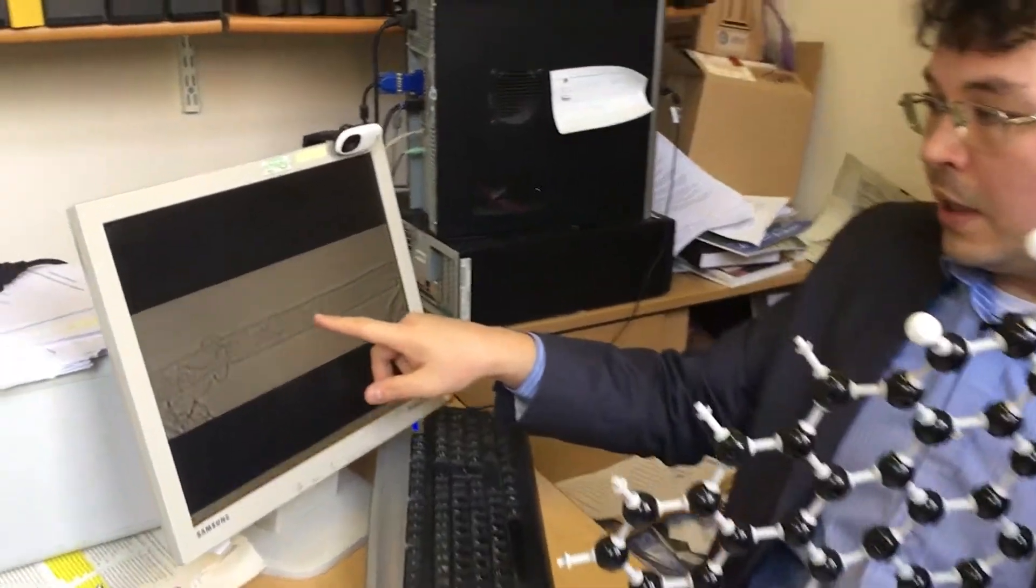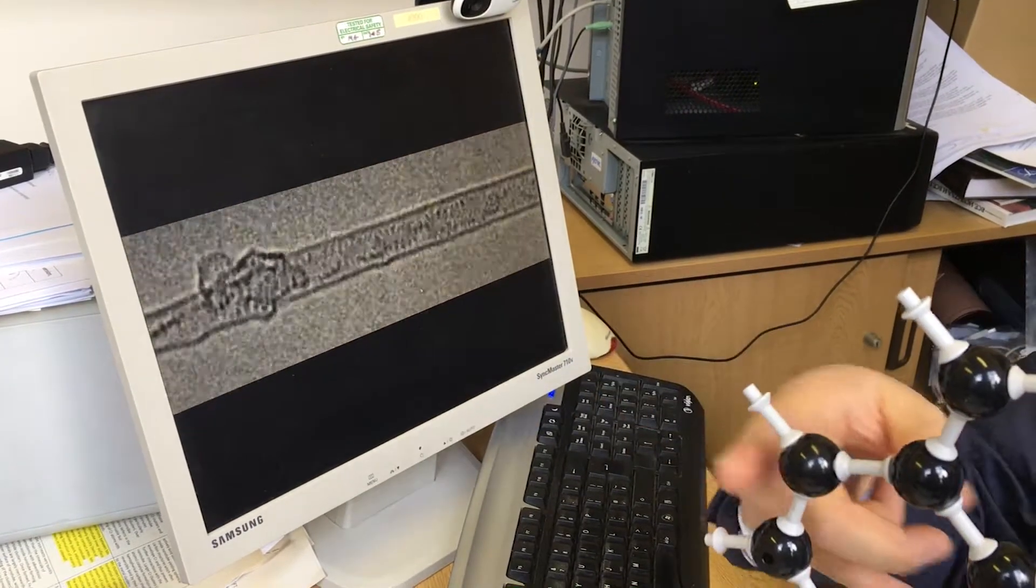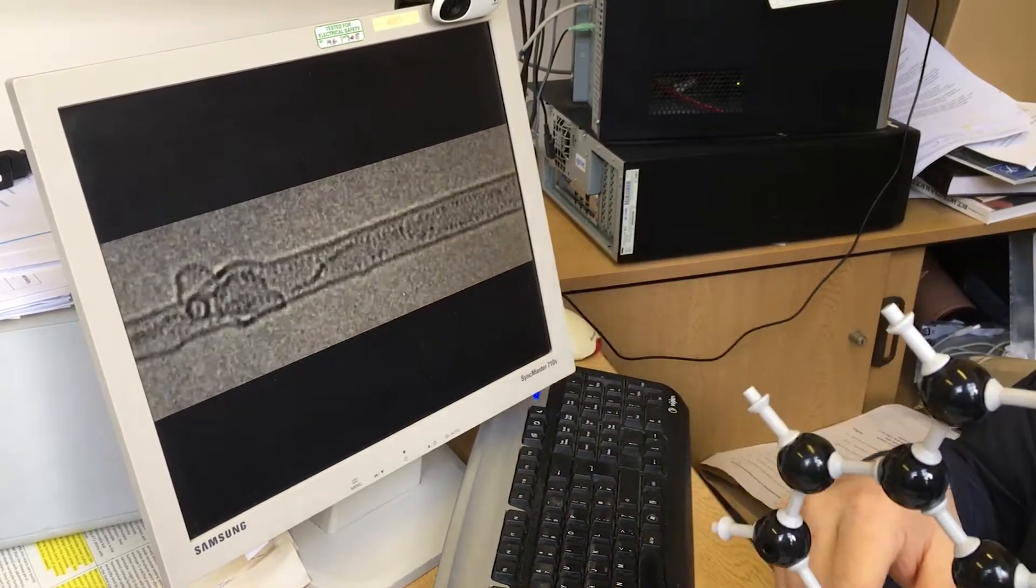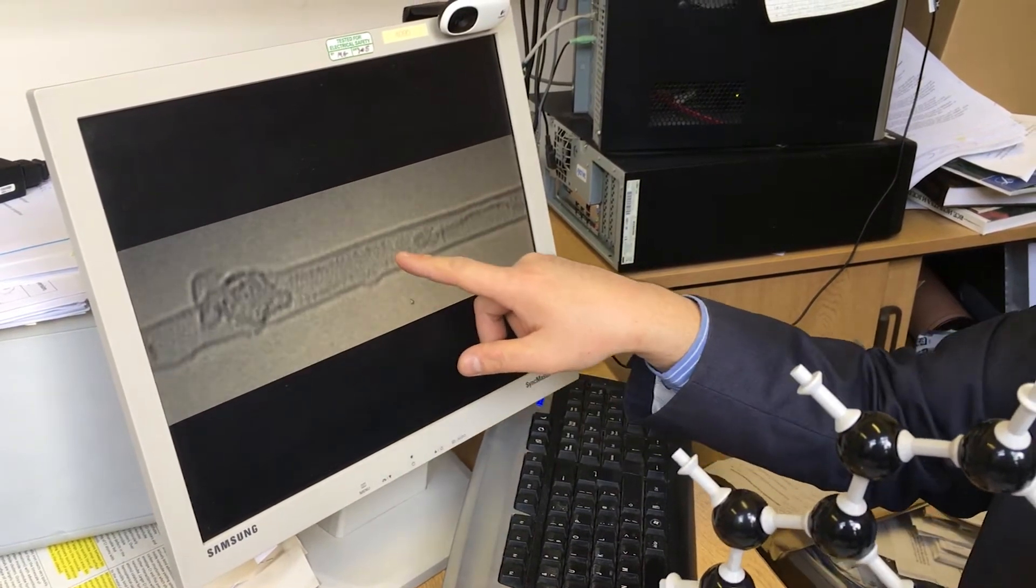You can see that the dark lines become longer and longer and longer. Because more molecules come and join to this end until eventually they transform into the nanoribbon of graphene, which is decorated with chlorine atoms.